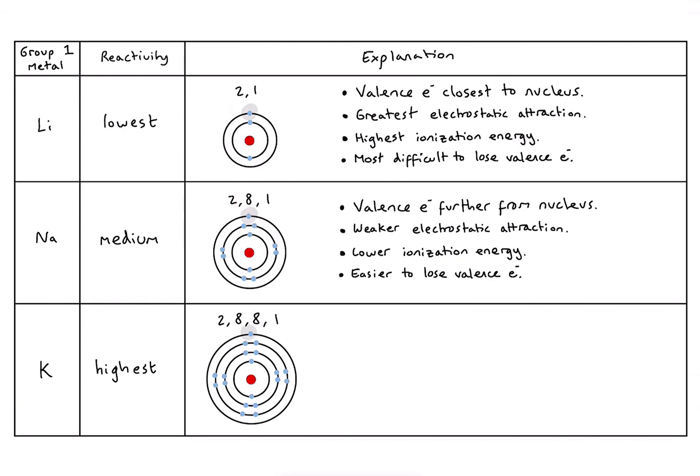Continuing that trend for potassium, the valence electron is the furthest from the nucleus of those three elements. Therefore, it's going to experience the weakest electrostatic attraction to the nucleus. And therefore, it's going to have the lowest ionization energy of the three of them. Therefore, it loses its valence electron most easily during chemical reactions. And this explains why potassium is more reactive than sodium, which is more reactive than lithium.